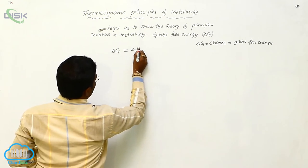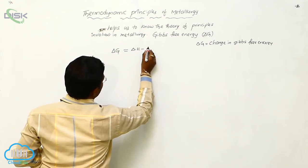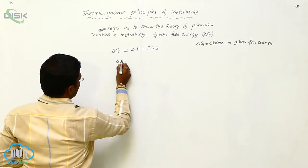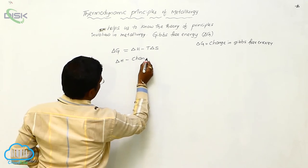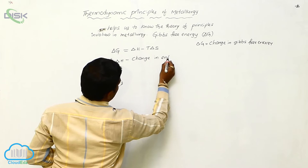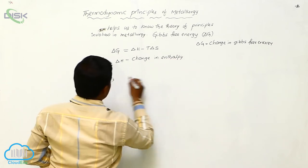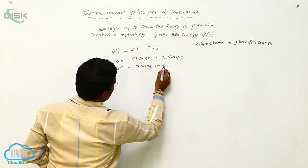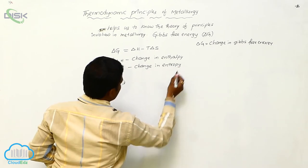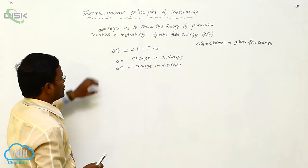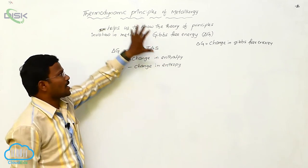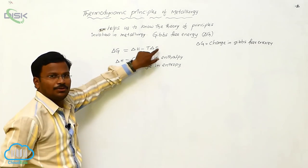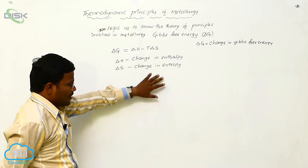Delta G equals Delta H minus T into Delta S, where Delta H is the change in enthalpy and Delta S is the change in entropy. This is the mathematical expression for Gibbs free energy according to thermodynamic laws.